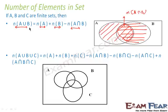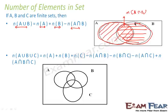And that's why this formula came about. The number of elements in A union B equals the number of elements in A — this area — plus the number of elements in B — this area — minus the area which was calculated twice. So what you get is the whole set, which is the number of elements in A union B.